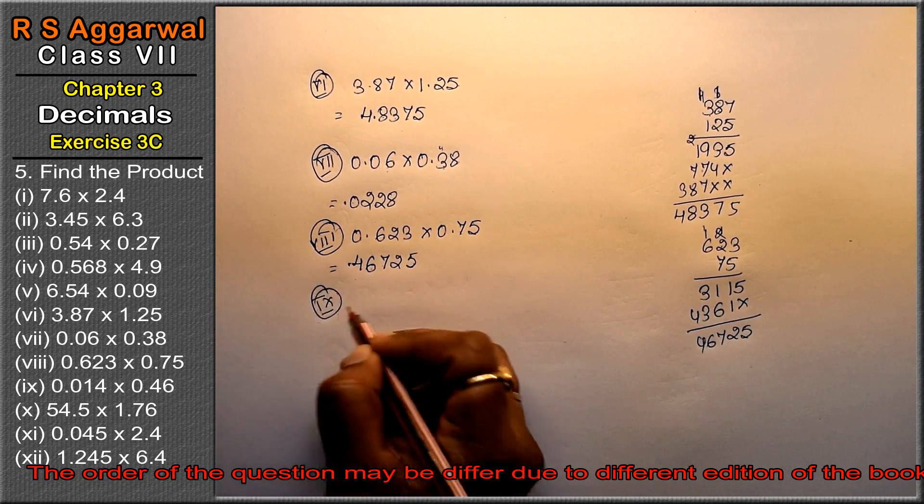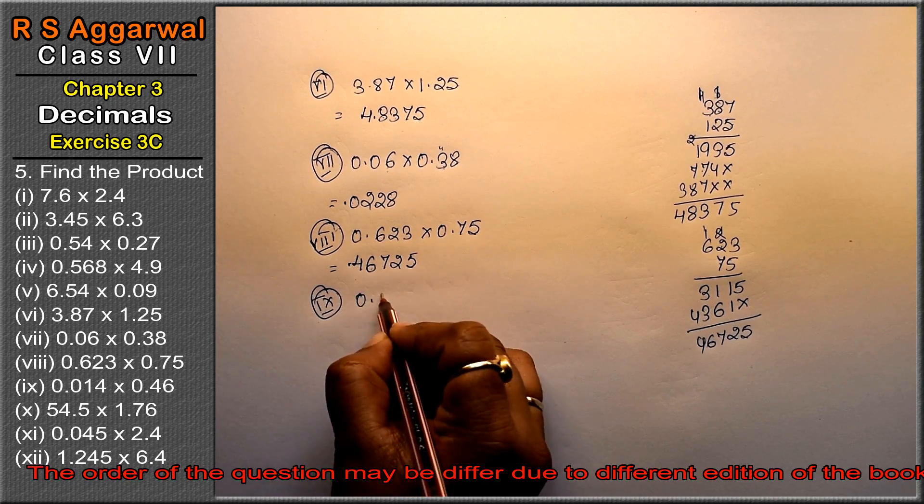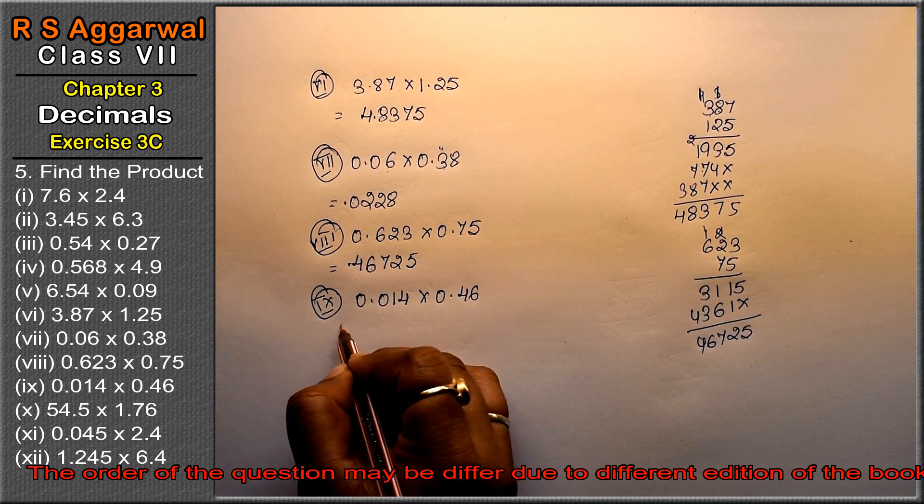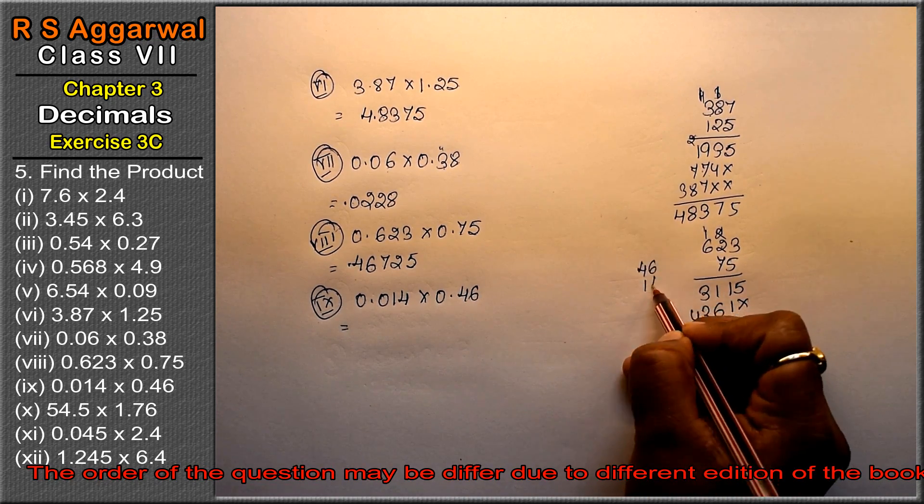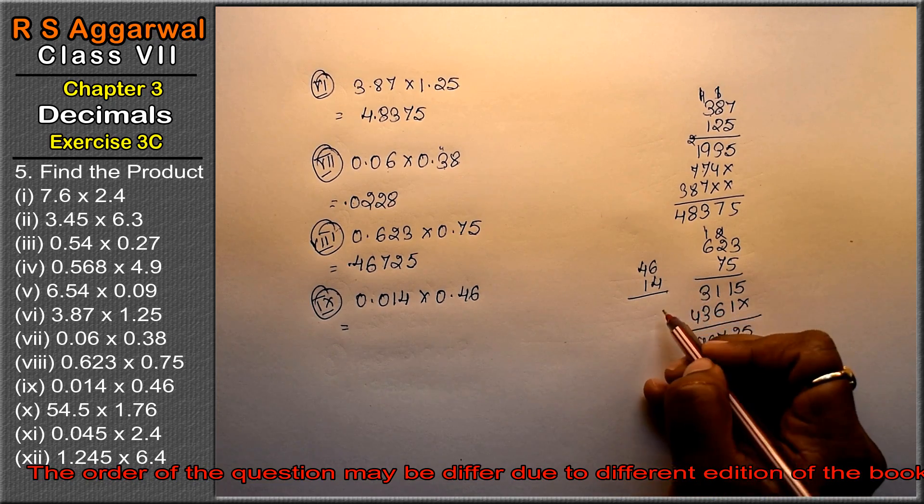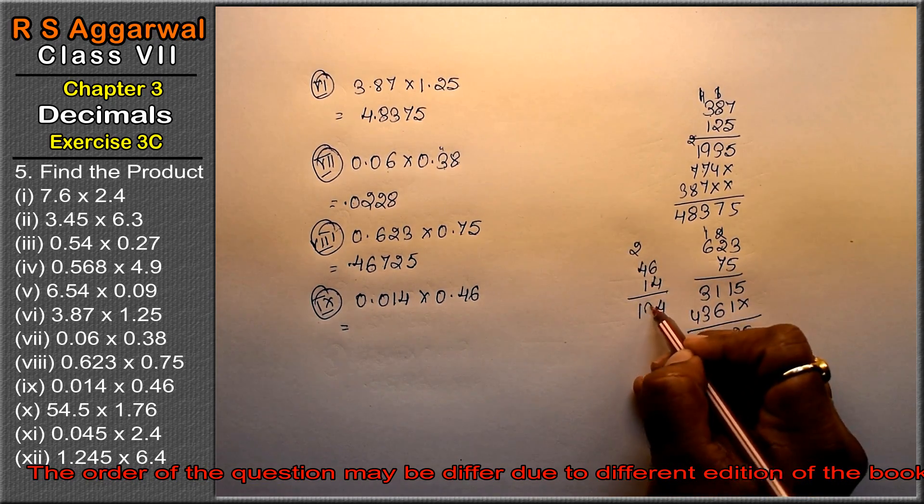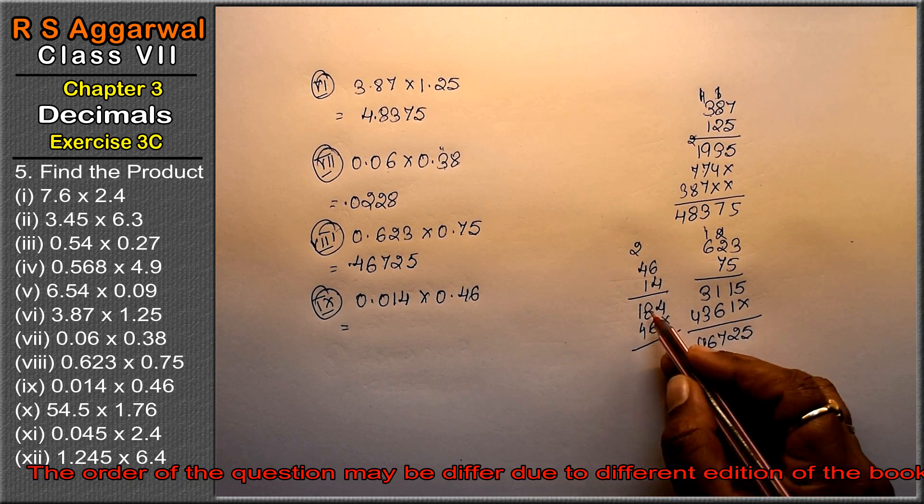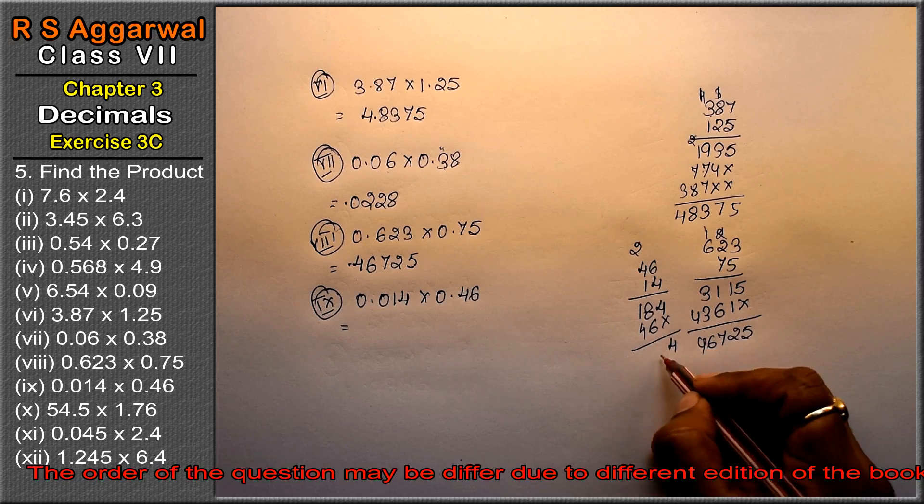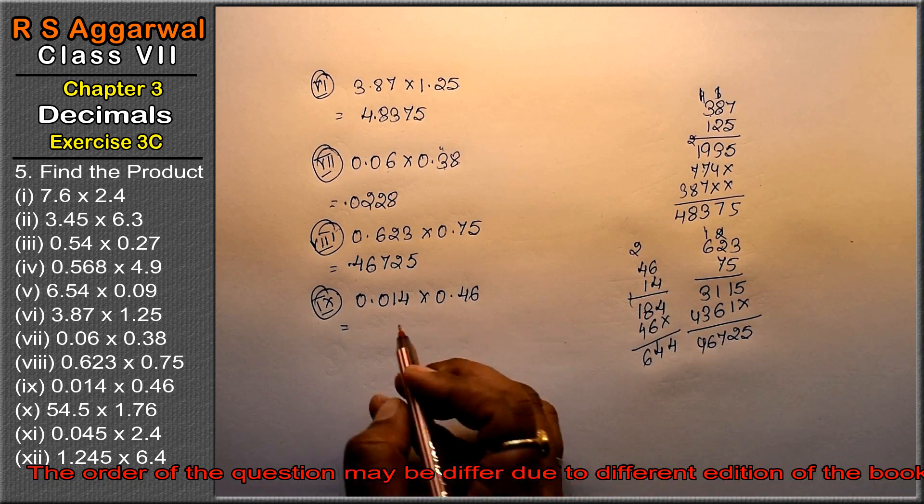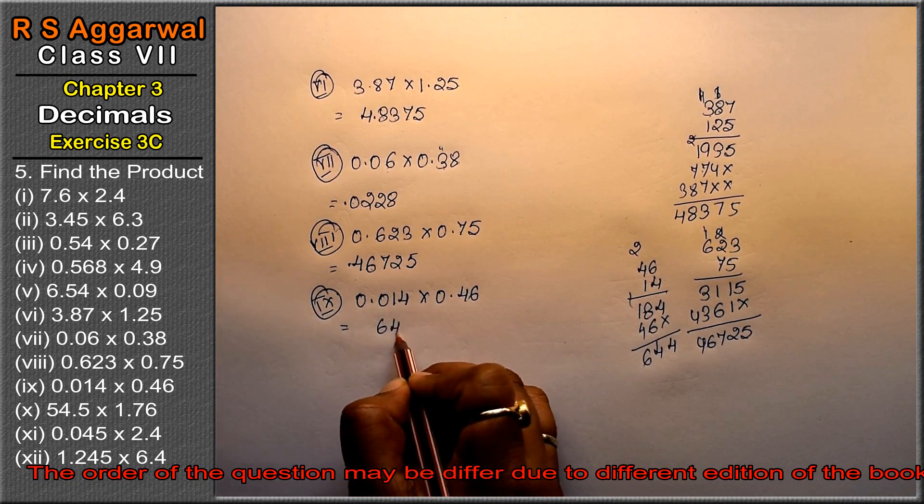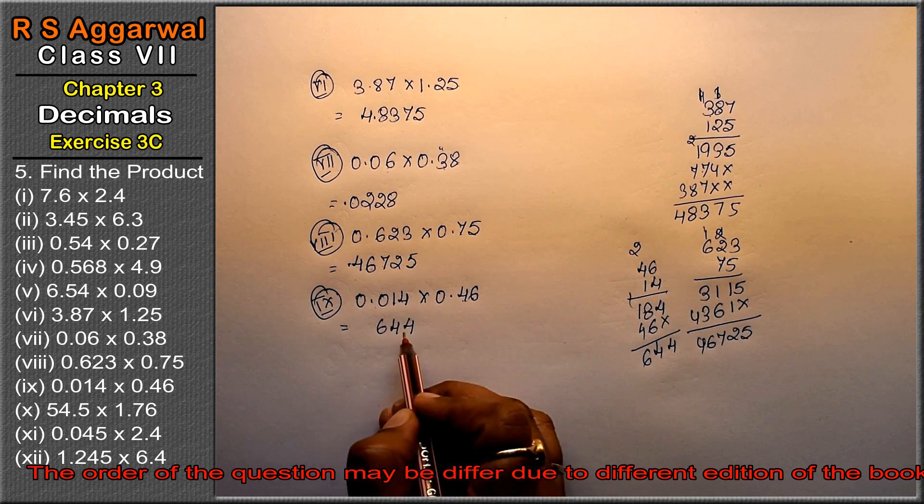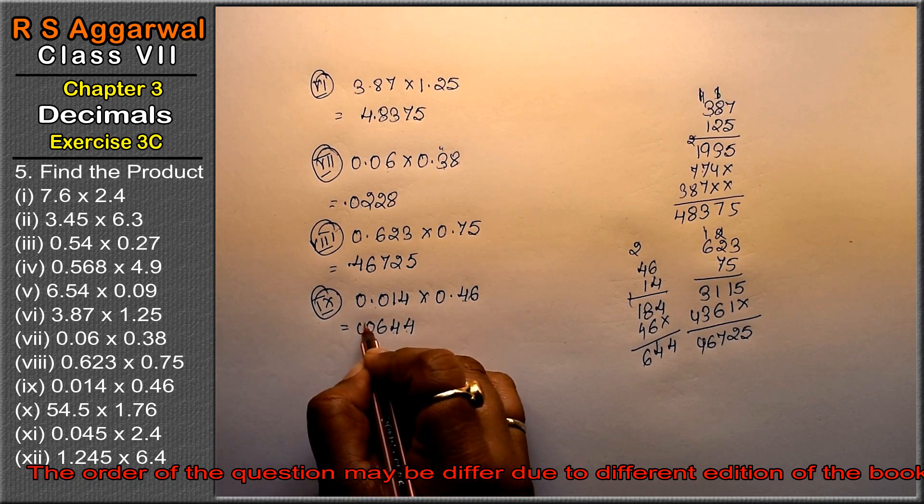Let's do ninth part: 0.014 into 0.46. Multiply 14 by 46 directly. 6 times 4 is 24, carry 2. 6 times 1 is 6, 7, 8. Then 4 times gives second row. Add: 644. Point: 3 plus 2 is 5 decimal places, so 0.00644 is the answer.